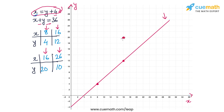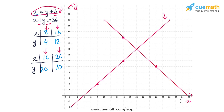Let's plot these two points: (16, 20) here and (26, 10) here. Drawing the line through these two points gives us the solution line for the second equation x + y = 36.